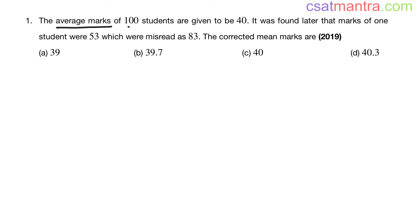The average marks of 100 students are given to be 40. It was found later that marks of one student were 53, which were misread as 83. The corrected mean marks are—mean is the average.